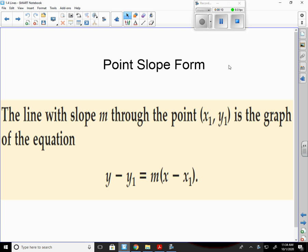A point slope form is a line with slope m that goes through the point x1, y1, and it's the graph of the equation y minus y1 equals m times x minus x1. So my y and my x stay, they're the variables, and y1 and x1 are the coordinates that go in for the point.